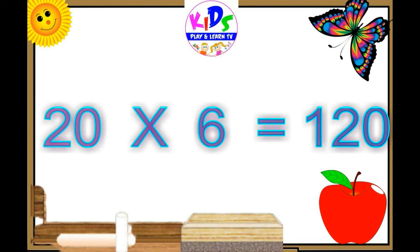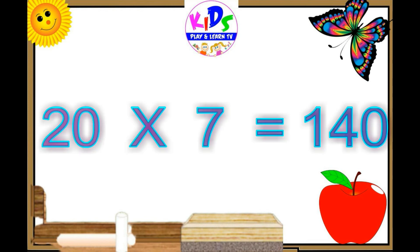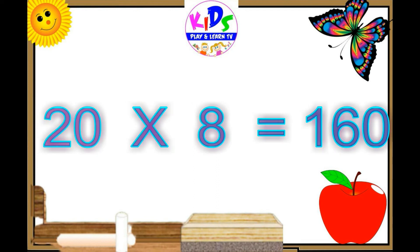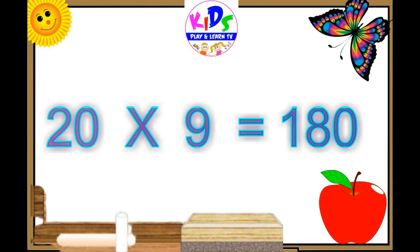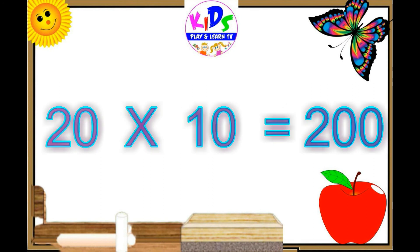Twenty sixes are one-twenty, twenty sixes are one-twenty. Twenty sevens are one-forty, twenty sevens are one-forty. Twenty eights are one-sixty. Twenty nines are 180, twenty nines are 180. Twenty tens are 200.